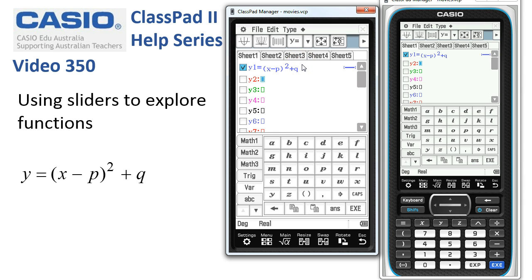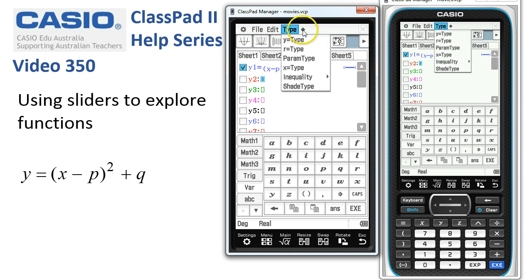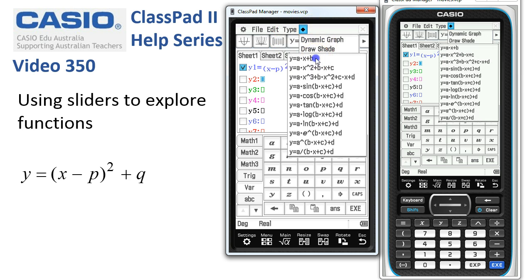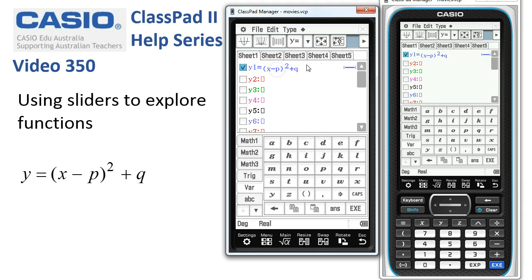So our next job is, there are of course under type, I meant to mention, under here there's a load of built-in functions that we could use to explore functions as well to save you typing in. But we're going with this function over here. Now to actually graph it, rather than tap the normal graph icon, we'll tap the one underneath file.